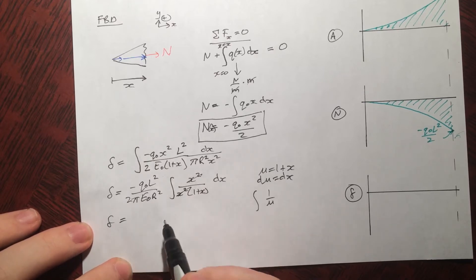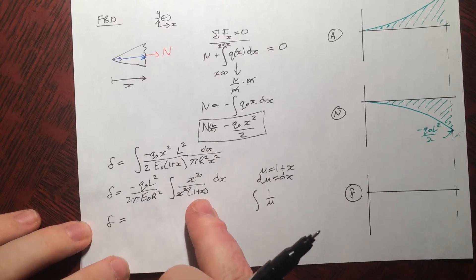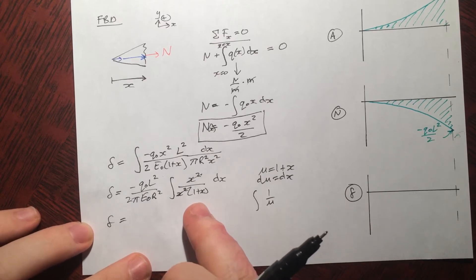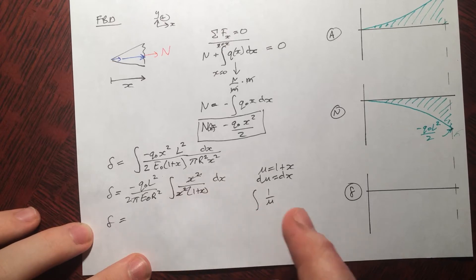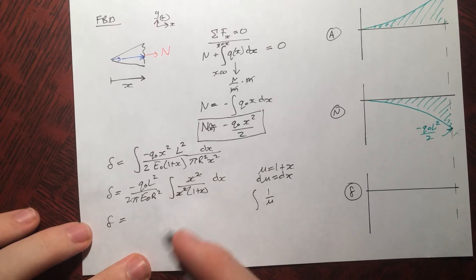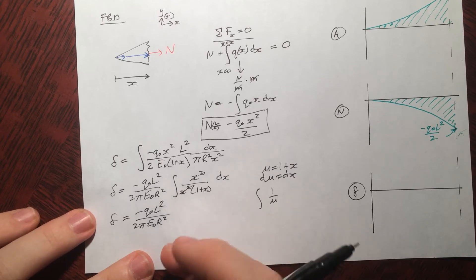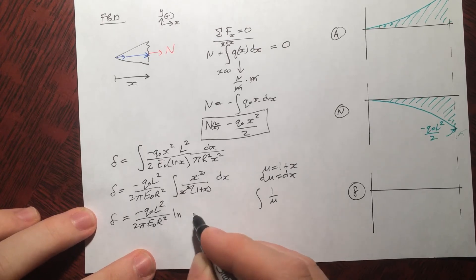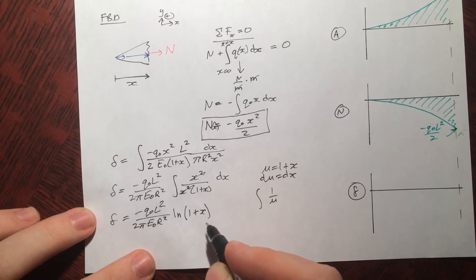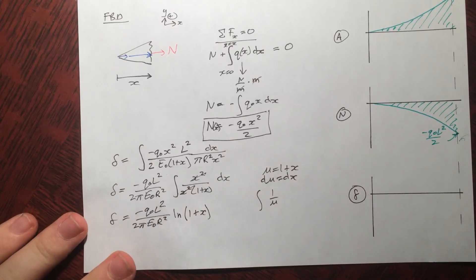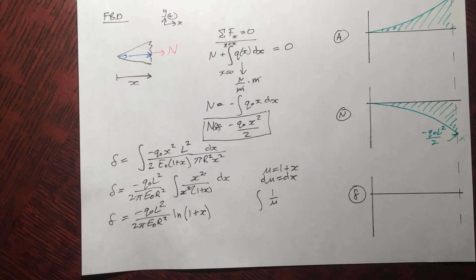So we can evaluate that. Delta equals to this constant times the ln of one plus x evaluated between x equals zero and x equals L. Negative q not L squared over 2 pi E R squared. And you do a little bit of math tricks. And you get ln absolute value one plus x. We don't really need absolute value because x is never going to be negative. So that's that.